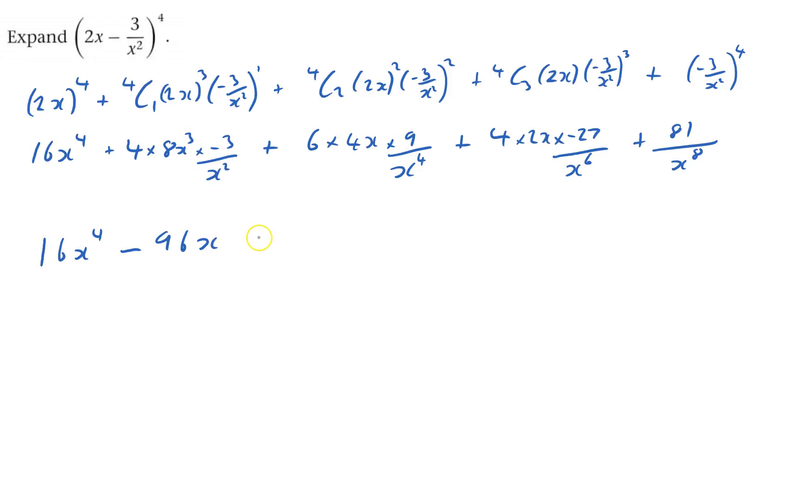And this one here is plus, so it was 19, that'll be 216, and I've got an x and I've got an x to the power of 4 on the bottom, so that x will cancel out one of those and leave us with over x cubed.